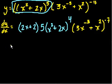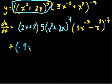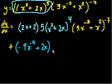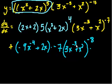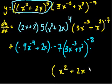Then we add the derivative of the second term times the first term. Using the chain rule again: the derivative of the inside is minus 9x to the minus 4 plus 2x. Then the derivative of the outer part gives times minus 7 times 3x to the minus 3 plus x squared, all to the minus 8. That whole thing — the derivative of the second term — gets multiplied by the first term: x squared plus 2x, all to the fifth.